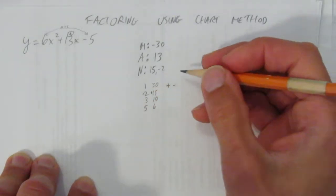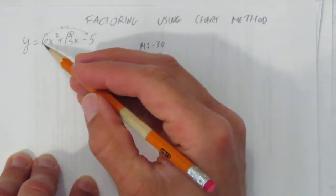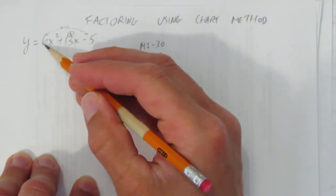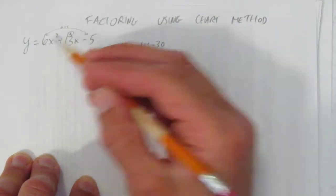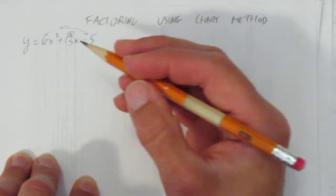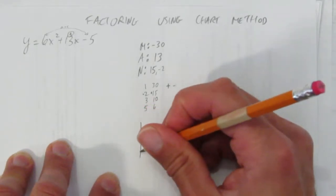Unlike Bergman technique, we have to do chart method here because of this number in front of the x squared. When you have a coefficient of x squared, you can't just use the MAN and write the answer. You need to use chart method or decomp.